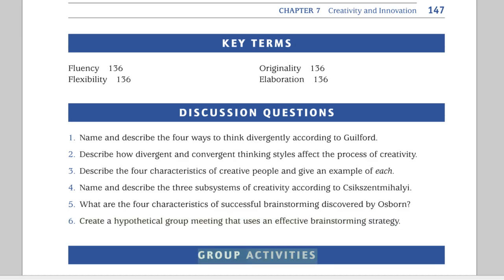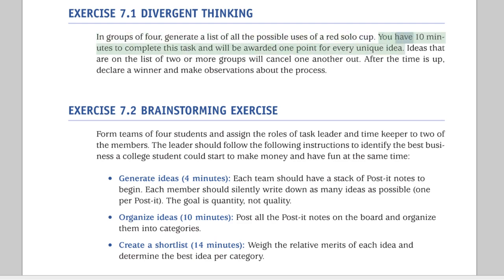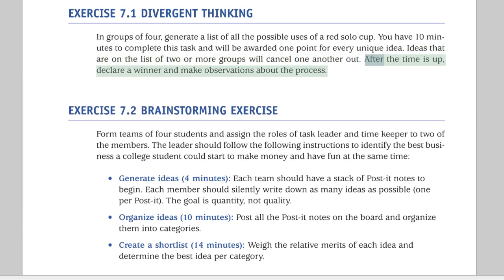Group Activities. Exercise 7.1: Divergent Thinking. In groups of four, generate a list of all the possible uses of a red solo cup. You have 10 minutes to complete this task, and will be awarded one point for every unique idea. Ideas that are on the list of two or more groups will cancel one another out. After the time is up, declare a winner and make observations about the process.